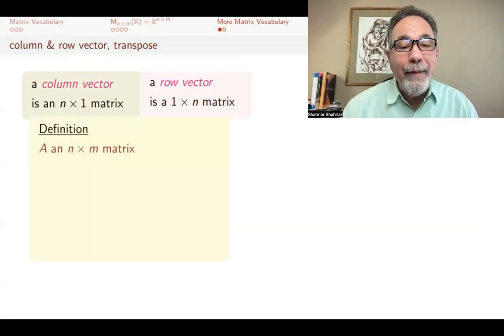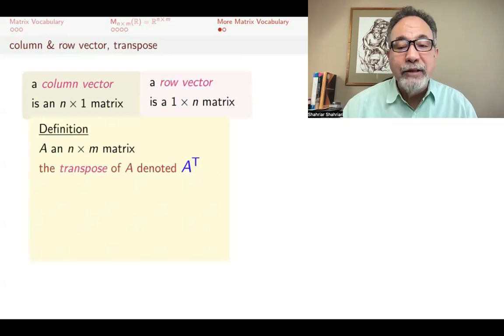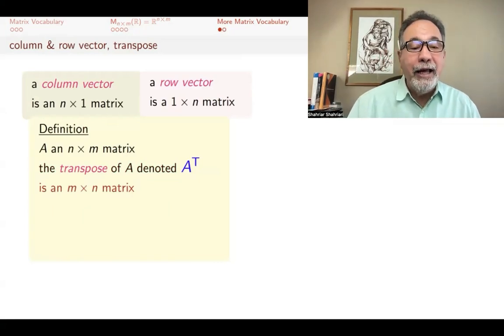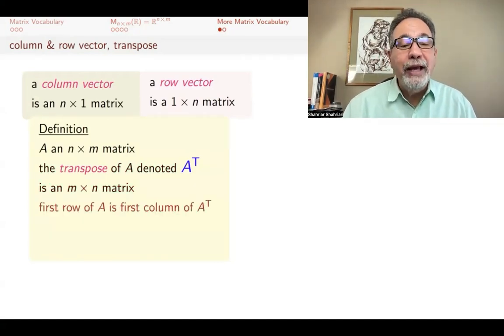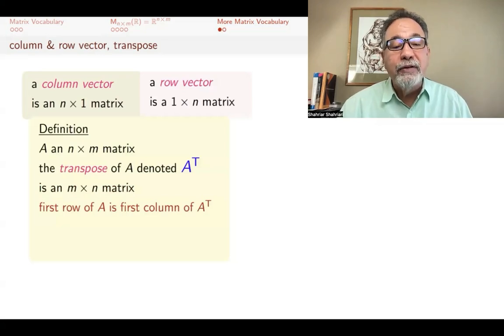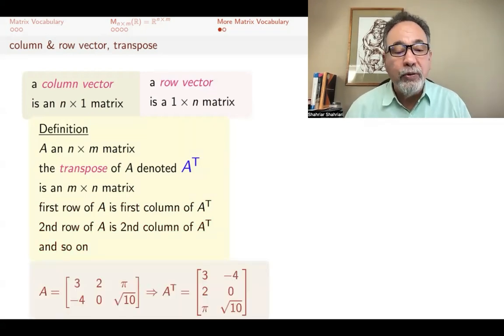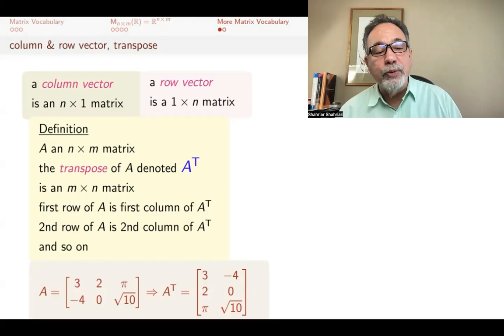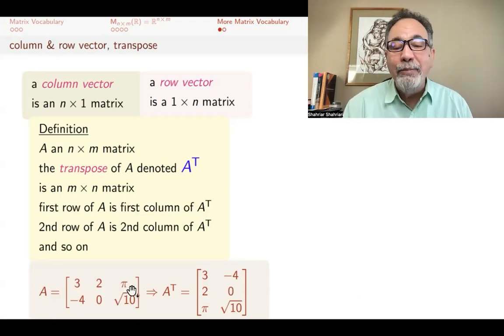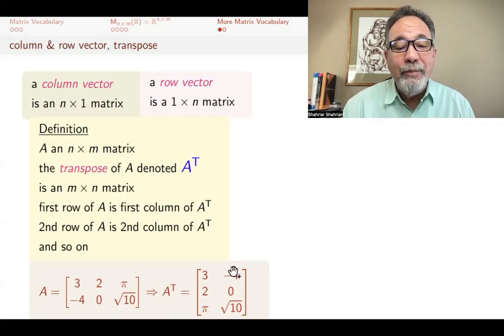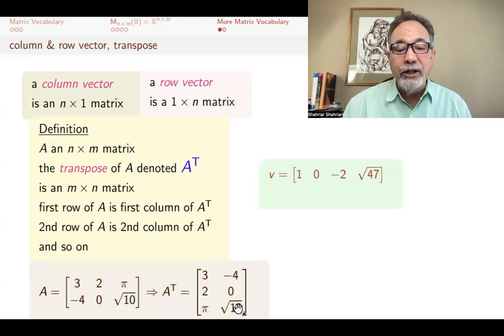If you have an n by m matrix, the transpose of that, which I denote by A with a T on top—other people might have other notations for that—is an m by n matrix. And the way you make it is by first row of A is the first column of A transpose, the second row of A is the second column of A transpose, and so on. For example, here's a two by three matrix A, and there is its transpose. I took the first row of A and made it the first column of A transpose. I took the second row of A and made it the second column of A transpose.